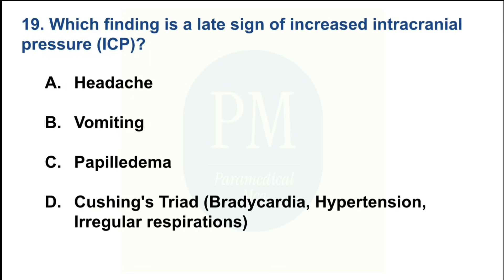Which finding is a late sign of increased intracranial pressure (ICP)? Option A — headache; Option B — vomiting; Option C — papilledema; Option D — Cushing's triad: bradycardia, hypertension, and irregular respirations. The correct option is Option D: Cushing's triad — bradycardia, hypertension, and irregular respirations.